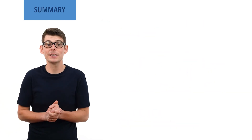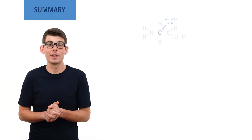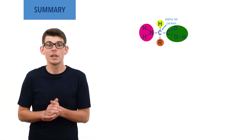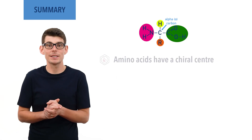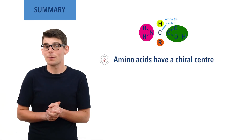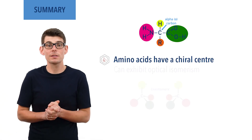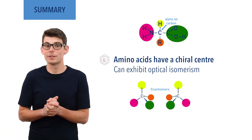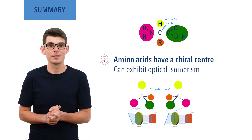Apart from in glycine, the central alpha carbon atom in an amino acid has four different groups bonded to it, meaning it is a chiral center. This means amino acids can have optical isomers and each isomer rotates plane polarized light in opposite directions. I hope you found this video useful — please check out other relevant videos in the links given in the description below and visit chemistrystudent.com for free notes and revision materials.